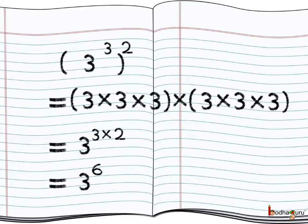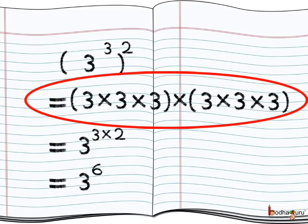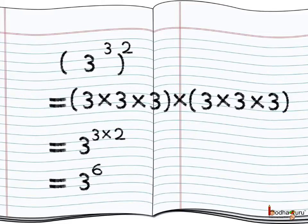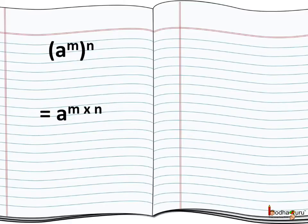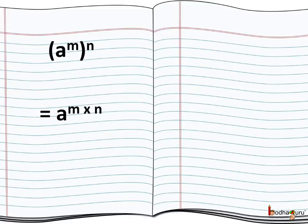Well, it means multiply 3 to the power 3, 2 times — that is 3 multiplied by 3 multiplied by 3, 2 such groups, that is total 3 threes in each group, making 6 threes in all. So we can generalize: if a is any rational number, then a to the power m raised to the power n, where m and n are whole numbers, means a to the power m multiplied by n.